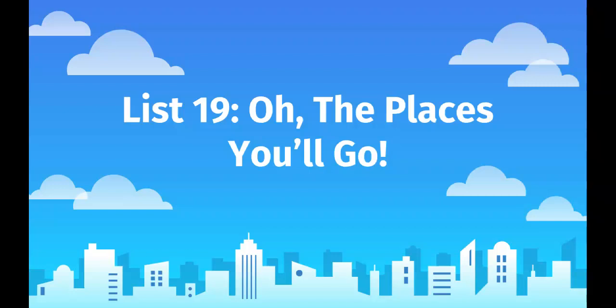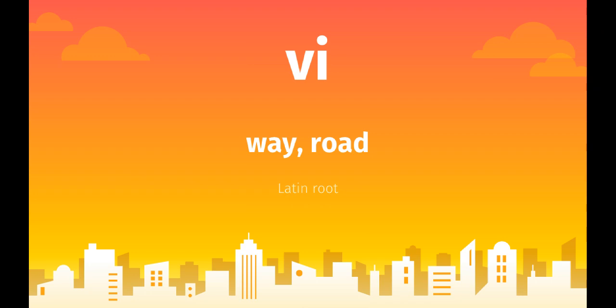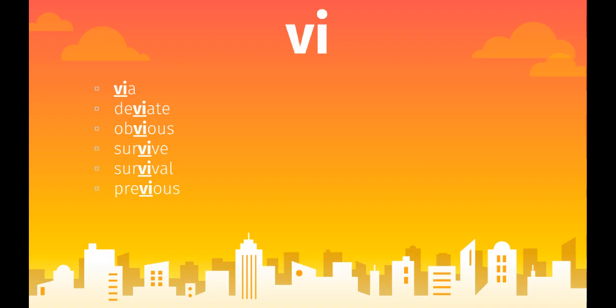List 19 of the places you'll go. This is the Vi video. Vi is a Latin root that means way or road, and your words are via, deviate, obvious, survive, survival, and previous.